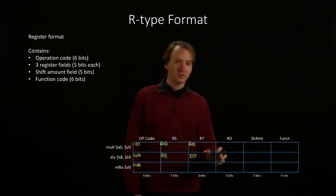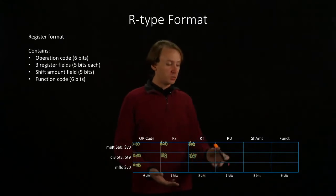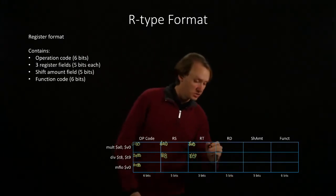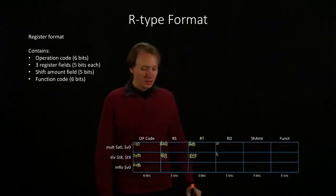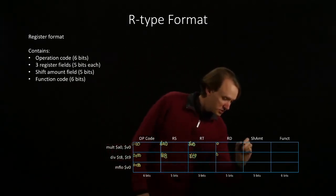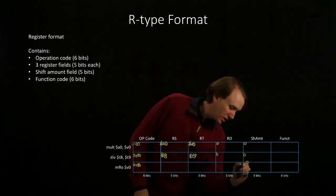But neither of these have a destination register, so we're not going to put anything in the destination register field. We'll just put zeros. None of these are shift instructions, so I can easily fill that one in.